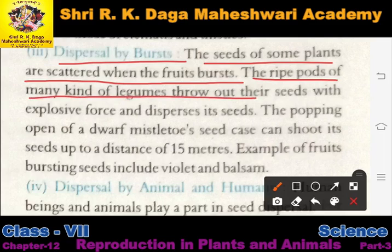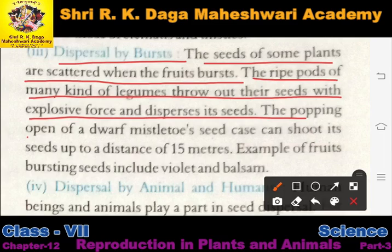The ripe pods of many kinds of legumes throw out their seeds with explosive force and disperse them. Jab ek fruit completely ripe ho jata hai to us samay baad usme bursting hoti hai, aur us bursting ke karan jo seeds hain woh sab jagah par girte hain. Woh ek explosive force lagate hain jiske karan seed longer distance tak reach kar pata hai.